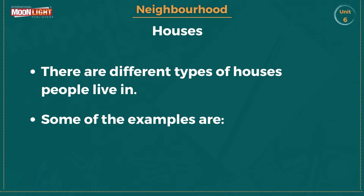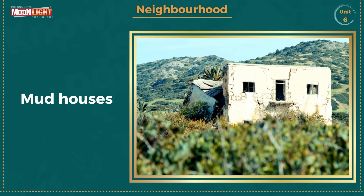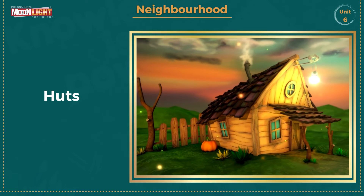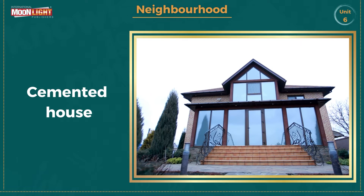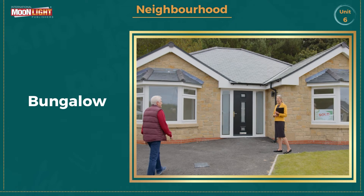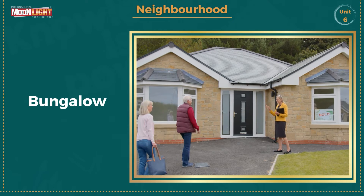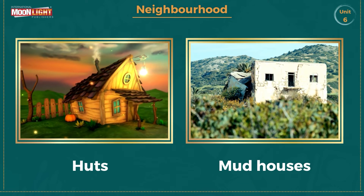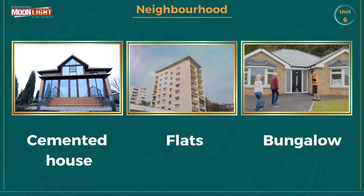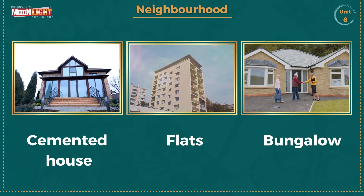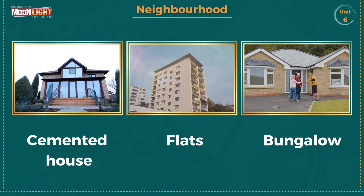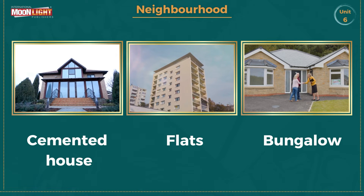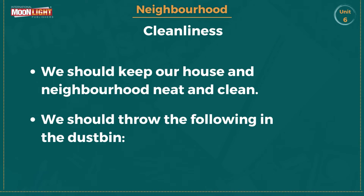There are different types of houses that people live in. Some examples are mud houses, huts, cemented houses, flats, and bungalows. Huts and mud houses are found in villages, while cemented houses, flats, and bungalows are found in cities.